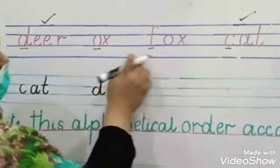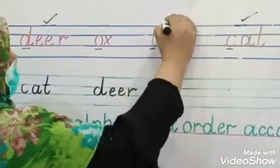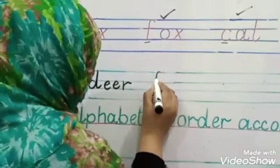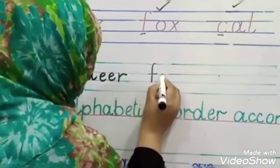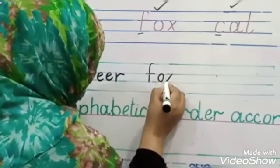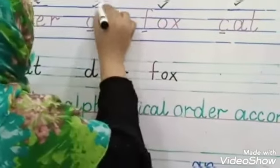Remaining two words, check it. Fox. Yes. D ke baad F, O, X, fox. And last one is ox.